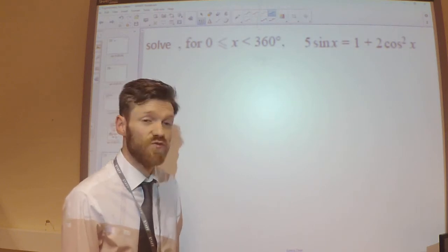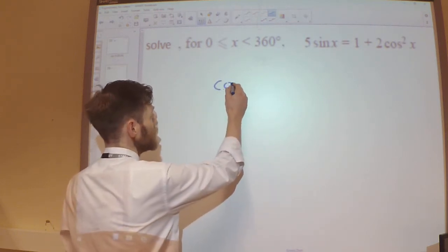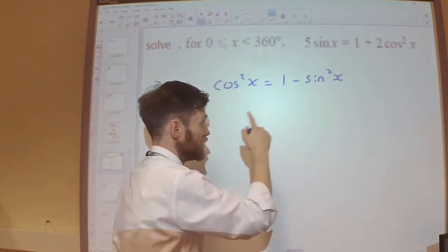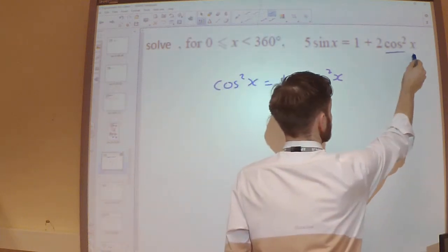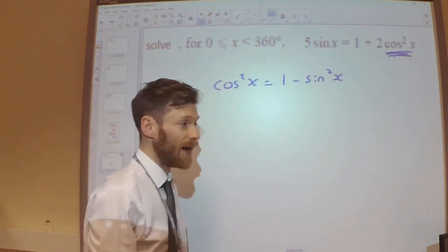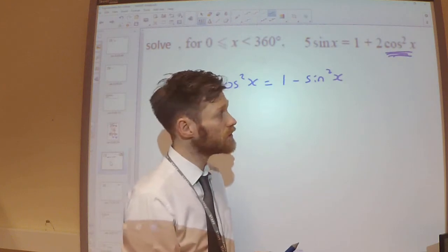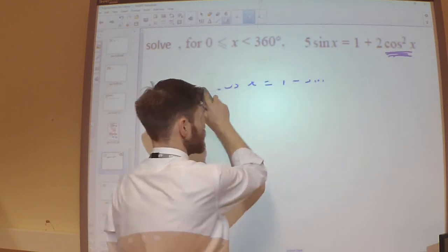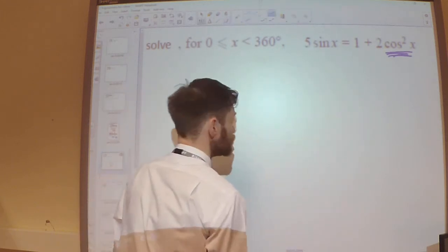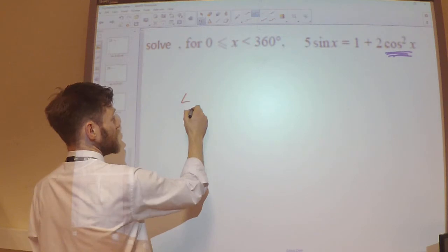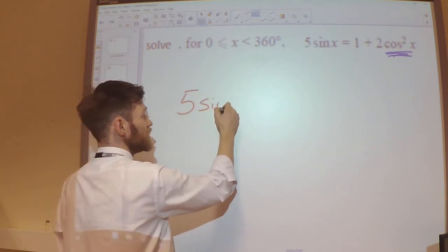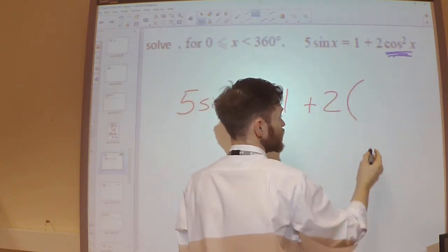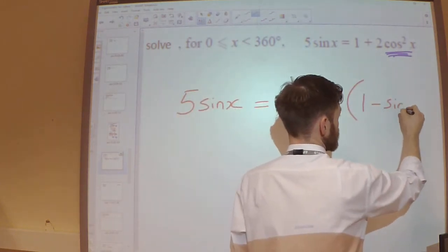So I know that I can rewrite cos squared. I know that cos squared is equal to 1 minus sin squared. I know that it's the same thing. So I can replace this cos squared with 1 minus sin squared. That way, it will match up with the sin that I have at the front there. So I will have 5 sin x is equal to 1 plus 2 lots of the 1 minus sin squared.